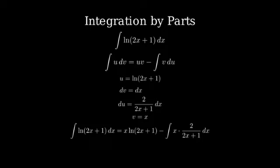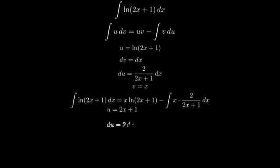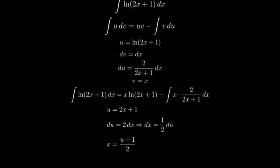To solve the remaining integral, let's make a substitution. Let u equal 2x plus 1. Then du equals 2dx, or dx equals 1 half du. Also, x equals u minus 1 over 2.